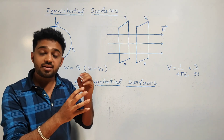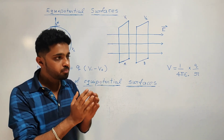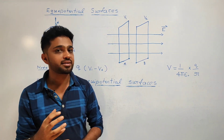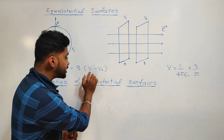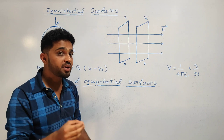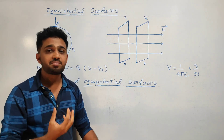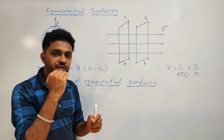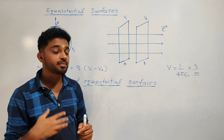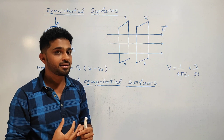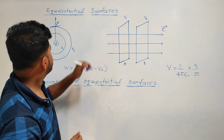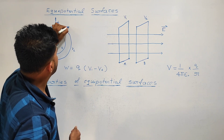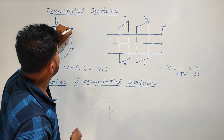Third property: a charge is moved on an equipotential surface. What work is done? Consider this equipotential surface, where the potential value is 20V.